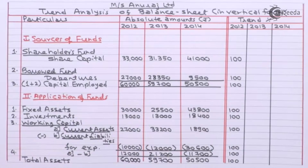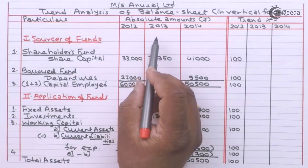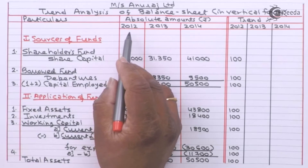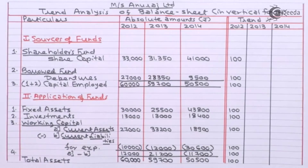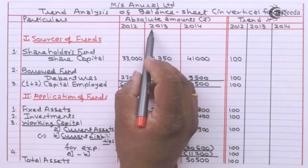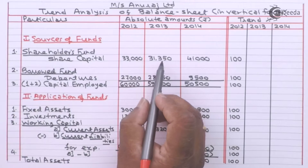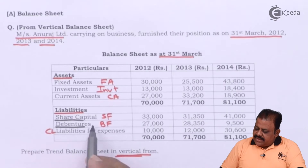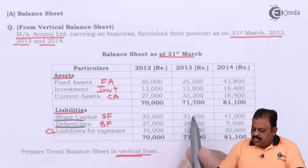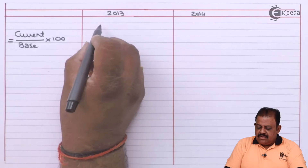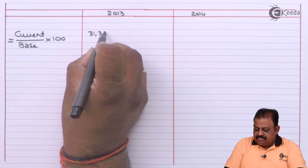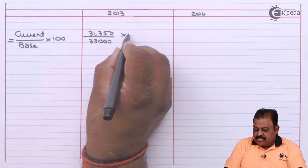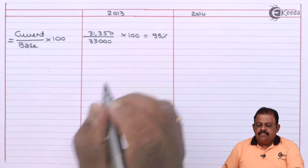For getting the trend values for 2013, the formula is: take the absolute amount in the 2013 column, divide by the base amount from the 2012 column, and multiply by 100. For example, share capital for 2013 is 31,350 — divide by base year 33,000 and multiply by 100 — which gives 95 percent.